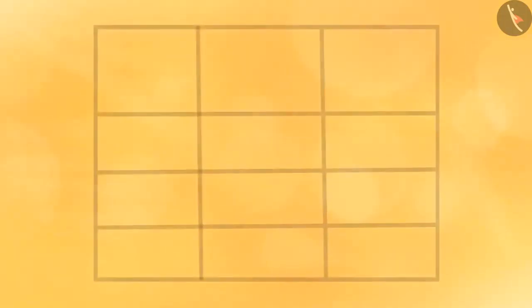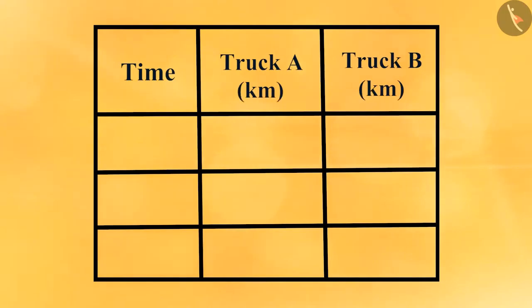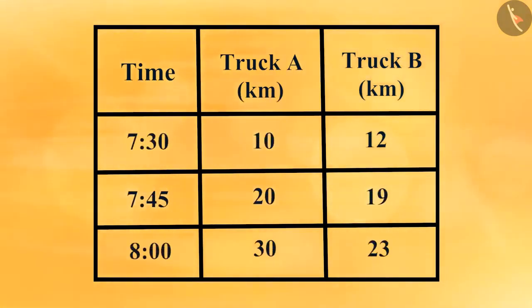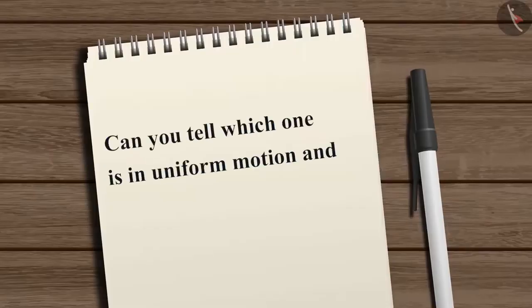Let's look at another example. Here is a table which shows time-distance data of two trucks: truck A and truck B. Can you tell which one is in uniform motion and which one is in non-uniform motion?